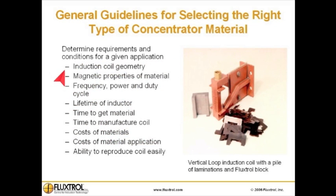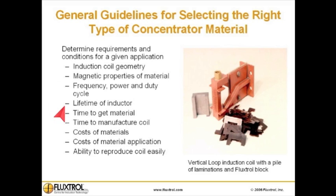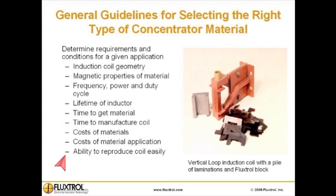General guidelines for selecting the right type of concentrator material: determine requirements and conditions for a given application based on induction coil geometry, magnetic properties of material, frequency, power and duty cycle, lifetime of inductor, time to get material, time to manufacture a coil, cost of materials, cost of material application, and ability to reproduce the coil easily.